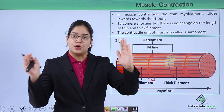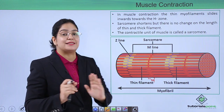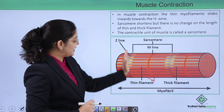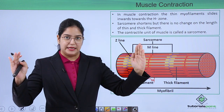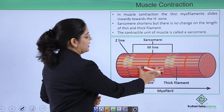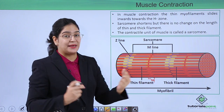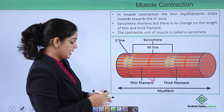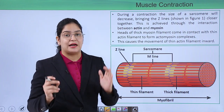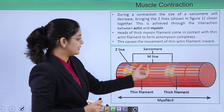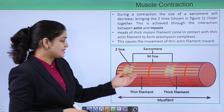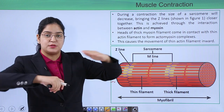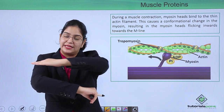When contraction occurs, the Z lines come closer to each other. The myosin does not move; instead, it makes the actin move inward — actin on this side moves inward and actin on the other side also moves inward, so they come close to each other. There is no shortening of the thick and thin filaments themselves; rather, they come closer to each other, which shortens the H zone. Because the actin is sliding along the myosin, it is called the sliding theory.